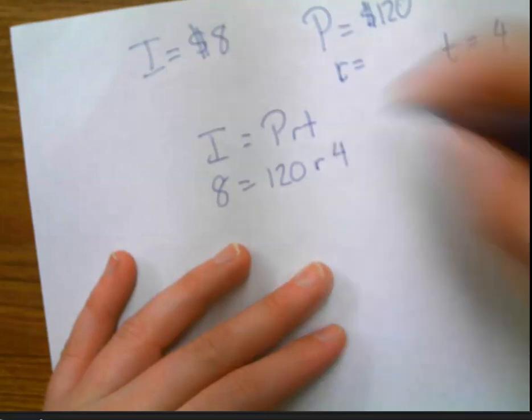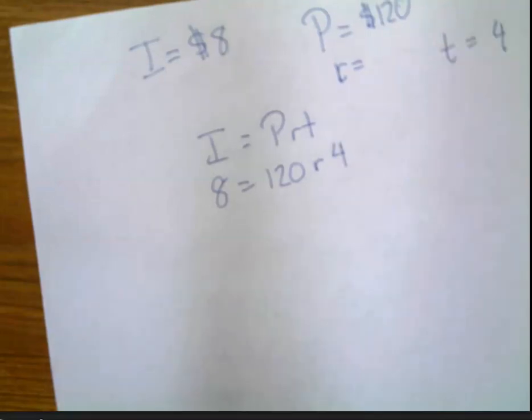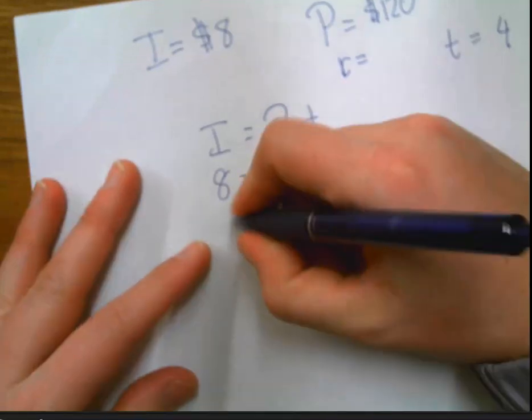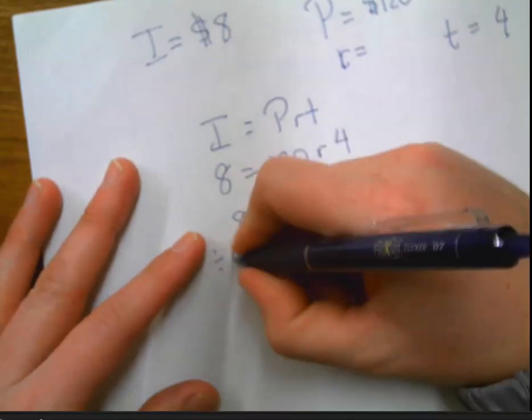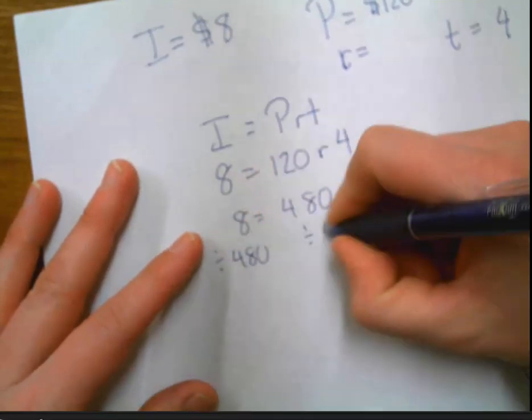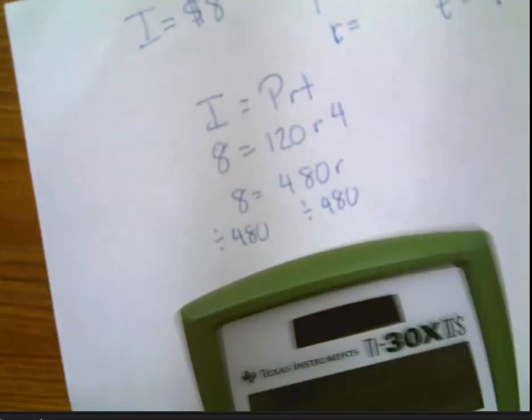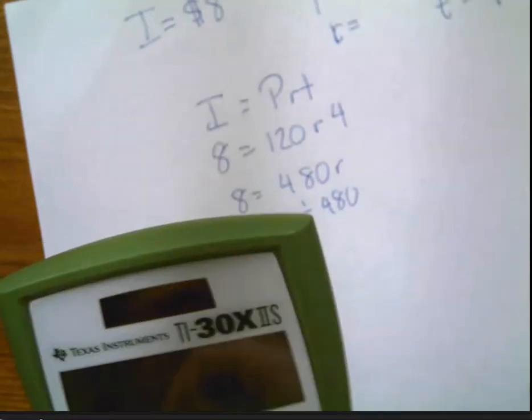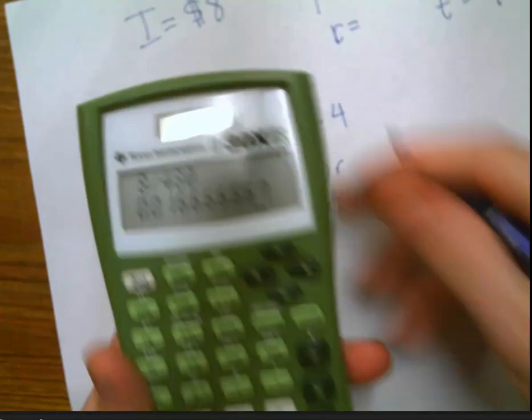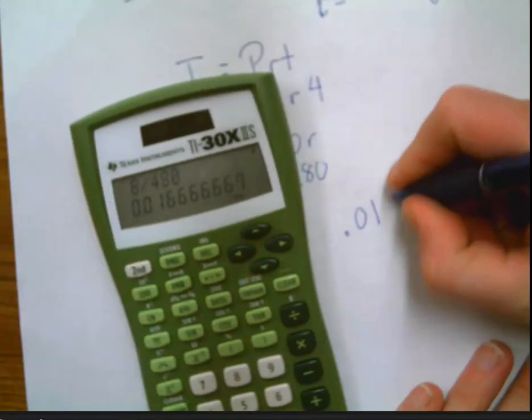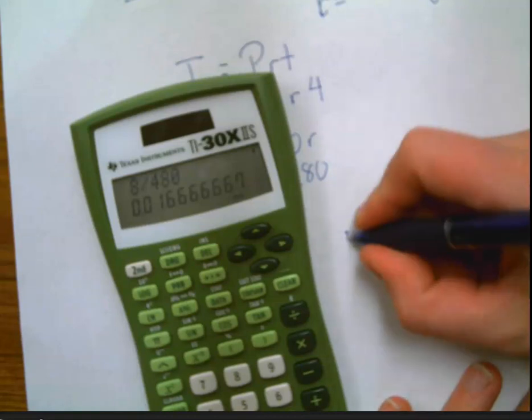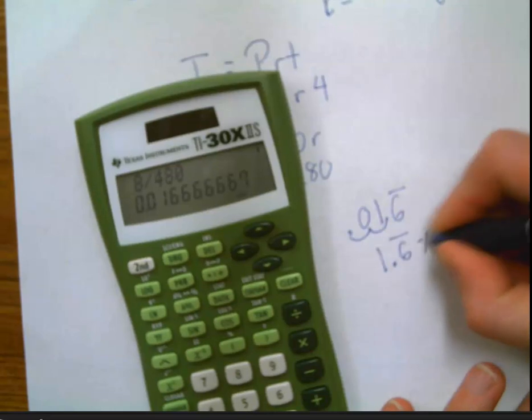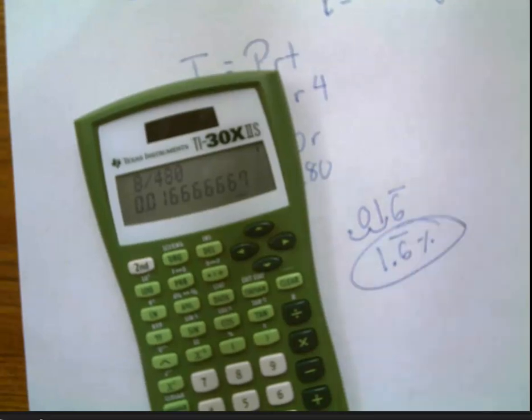So then I would do 120 times four, and 120 times four is 480. Now, I divide both sides by 480, and I do 8 divided by 480, and I get .016 repeating. Well, .016 repeating, move it over 1, 2. That is 1.6%, or 1.7 if you're rounding.